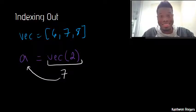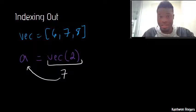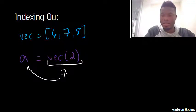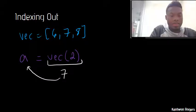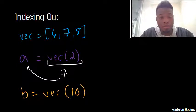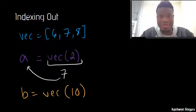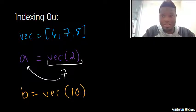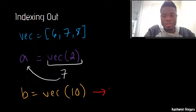The one rule with indexing things out of a vector is that the index you're trying to access has to exist. So if I try to say something like b is equal to vec(10), there is no index 10 inside of my vector. I can't try to get something out of something that doesn't exist. So therefore, this produces an error.